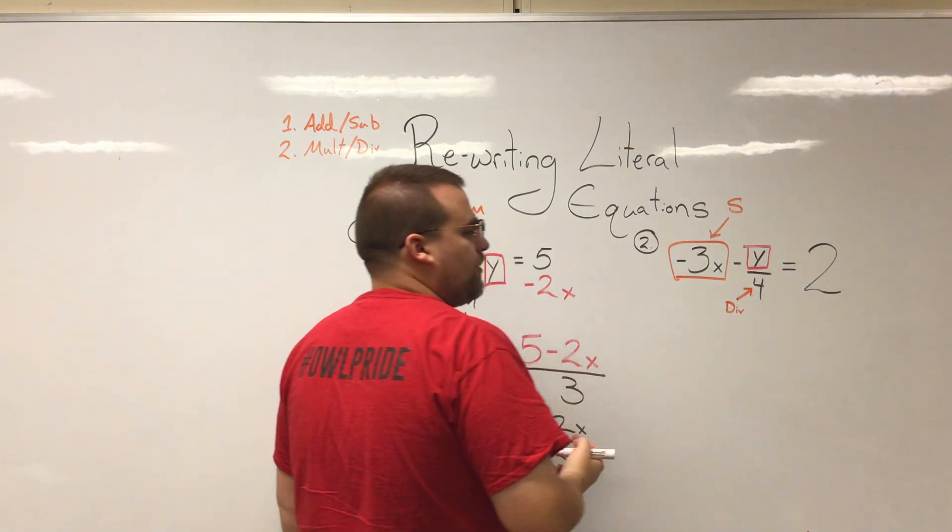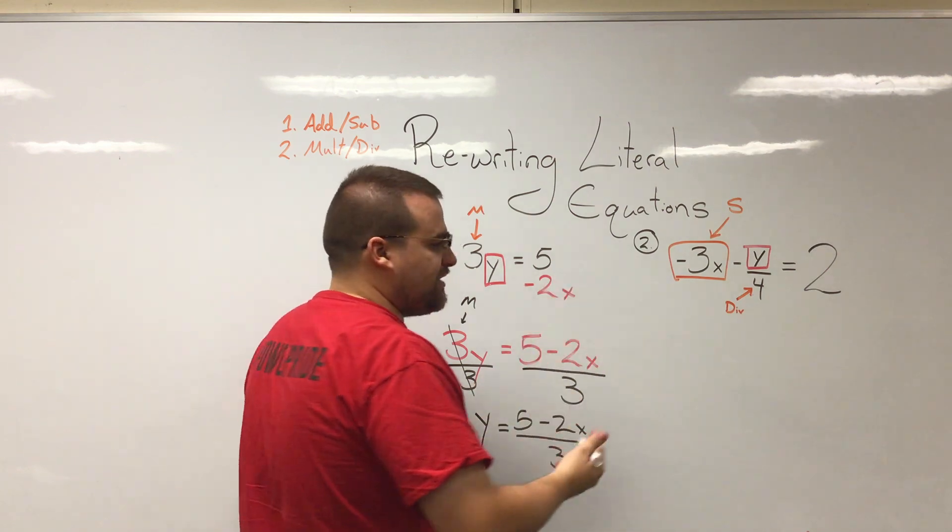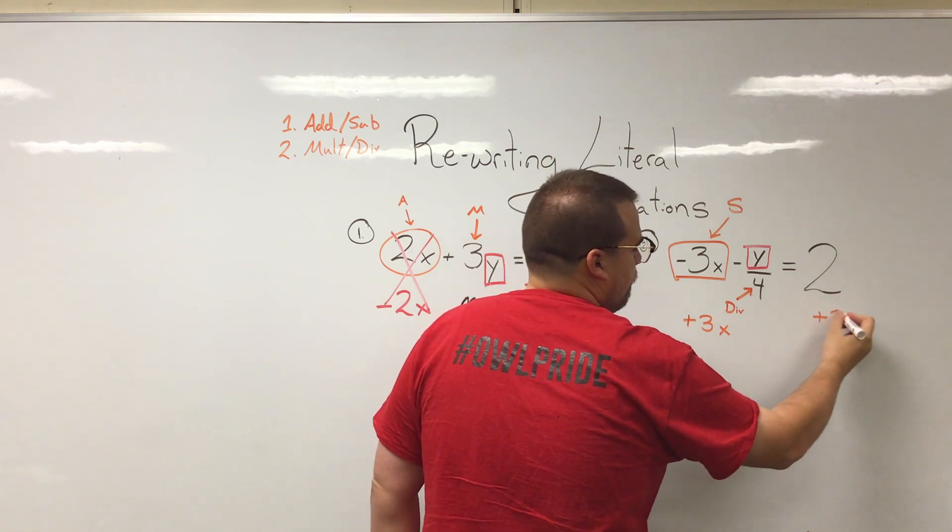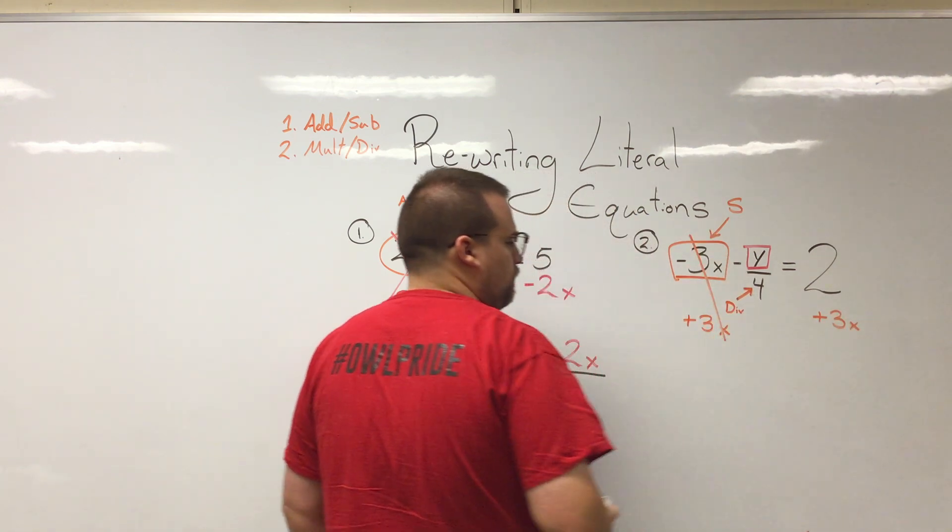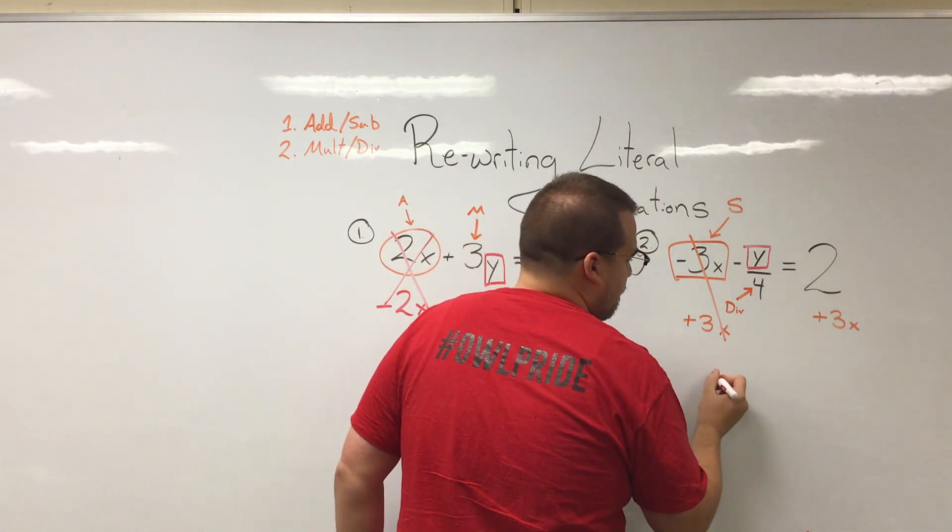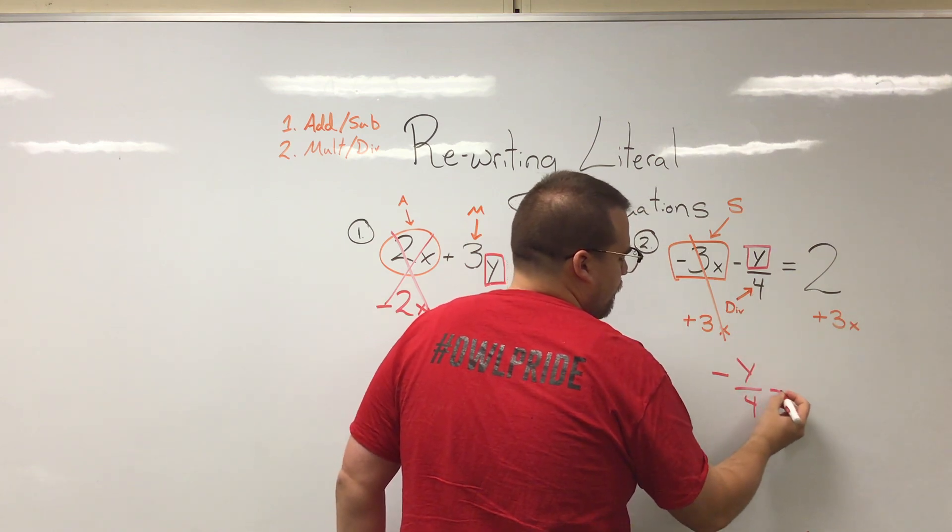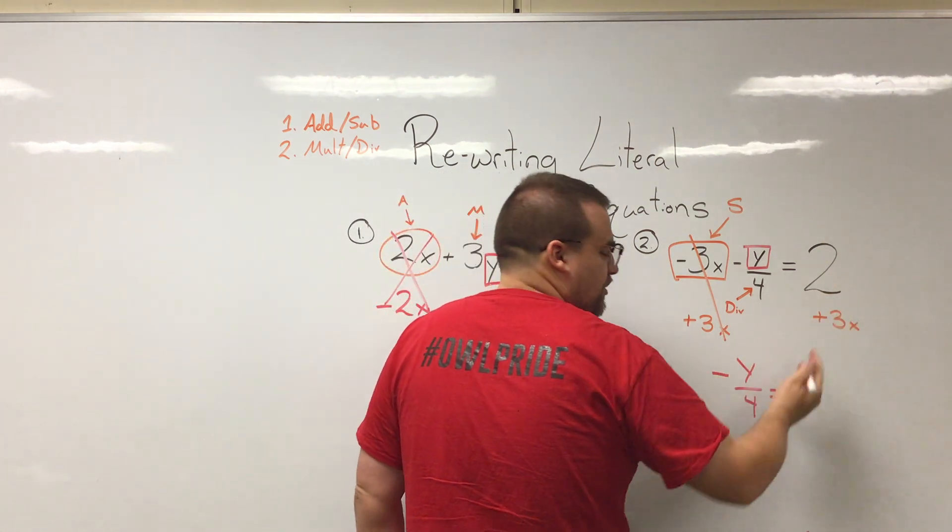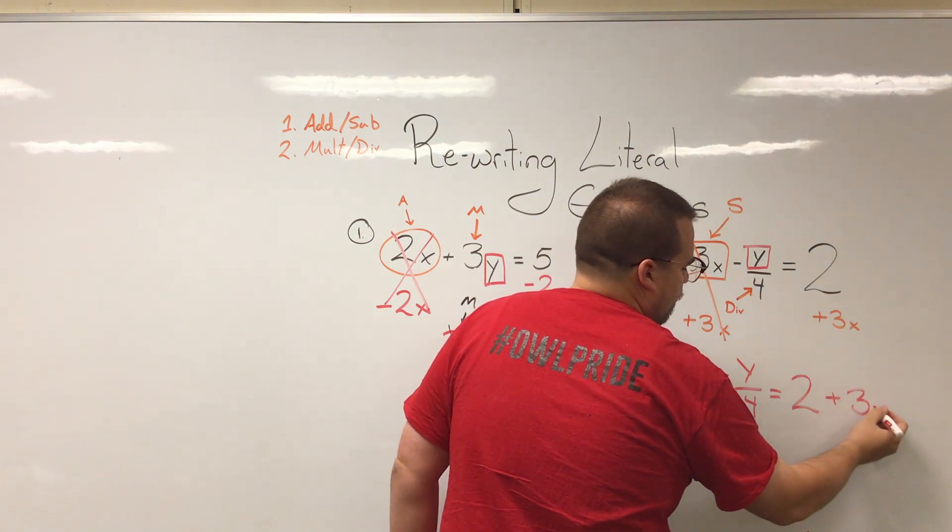Negative 3x with it subtracting, I'm going to use its inverse operation of addition to move it to the other side. So plus 3x. So these are going to cancel out. That'll leave me with just negative y over 4 equals, remember I cannot combine those because they have different variable configurations, 2 plus 3x.